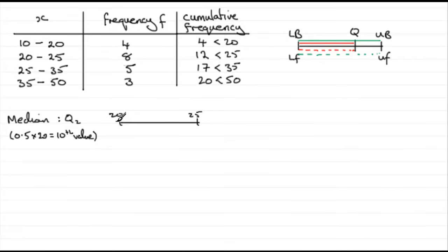Now, how many values are below 20? Well, we can see that there are 4 values below 20. So I put a 4 here. And how many values are below 25? Well, you can see that there'll be 12.